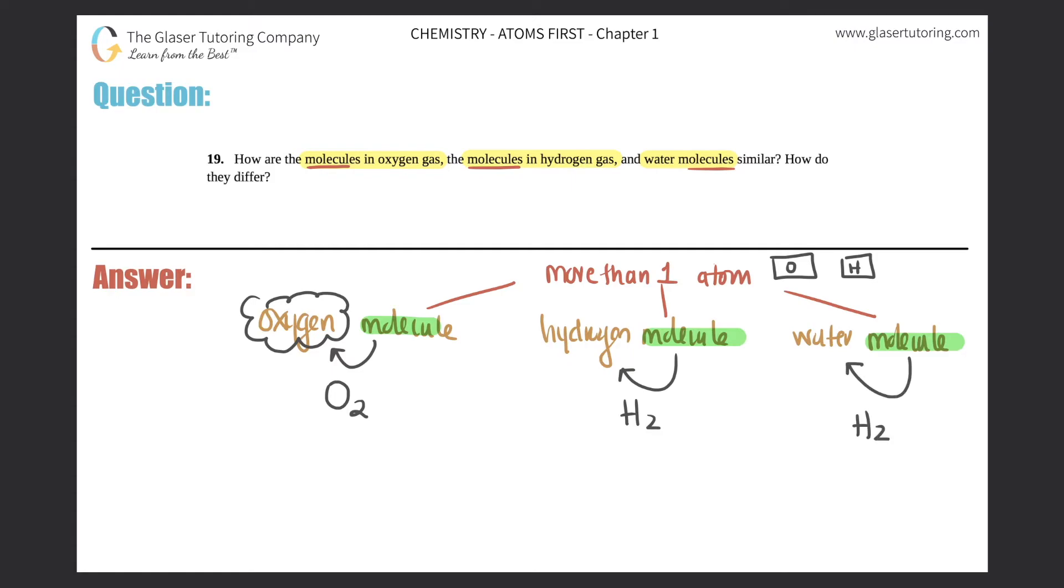So this one would be H2, and then a water molecule just got to be more than one atom, but we know what water is—it's H2O. So let's write down over here what are the similarities. The similarities is that for each one of them, doesn't matter whether it's an oxygen molecule, hydrogen molecule, or water molecule, they all contain more than one atom. That's the similarity. In here there's two oxygens, here there's two hydrogens, and for H2O there's two hydrogens and one oxygen.